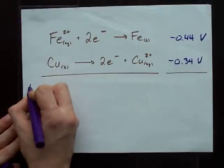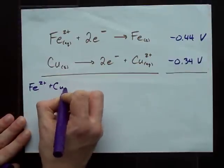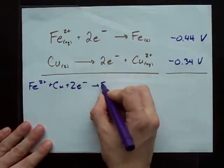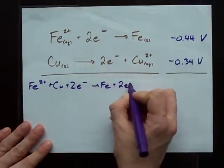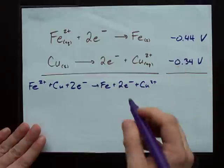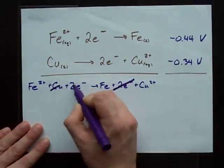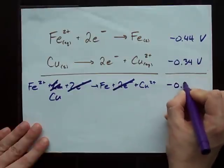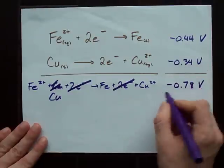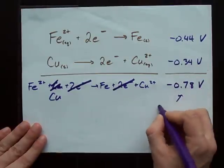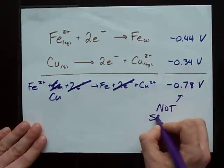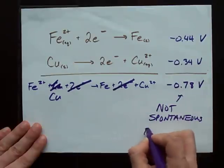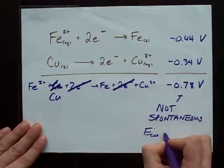When I add this reaction together, Fe 2+ and copper on the left, Fe and copper 2+ on the right. My total E cell when I add these up is negative 0.78. This is not spontaneous. It does not happen as written because E cell is negative.